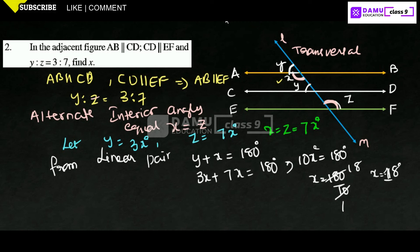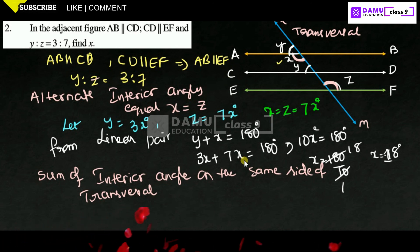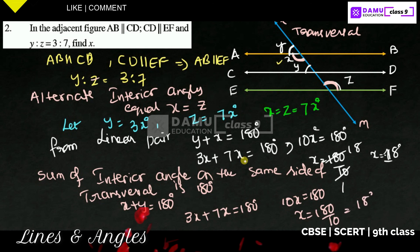A second method uses co-interior angles: the sum of interior angles on the same side of the transversal equals 180 degrees. So x plus y equals 180 degrees, which gives 7x plus 3x equals 180 degrees, then 10x equals 180 degrees, and x equals 18 degrees.